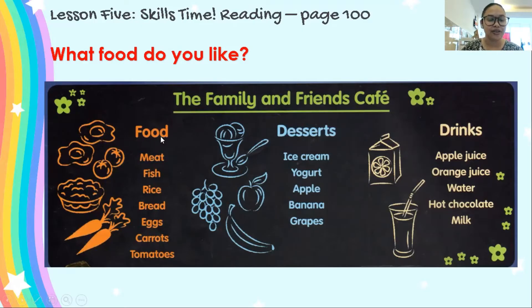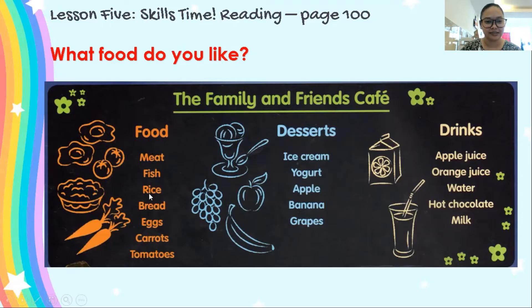Let's read first the food. Can you read the words? Meat. What's this? Fish. Rice. Bread. Eggs. Carrots. Tomatoes.